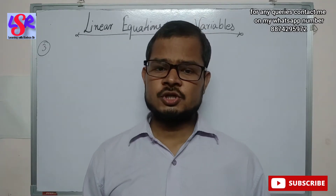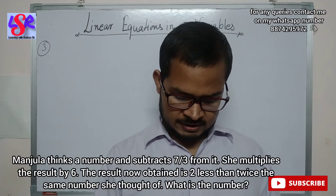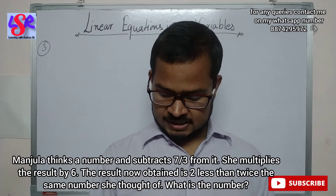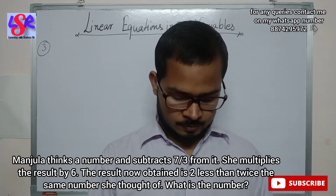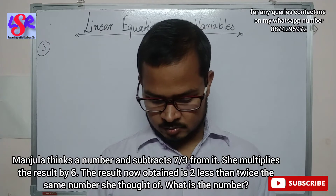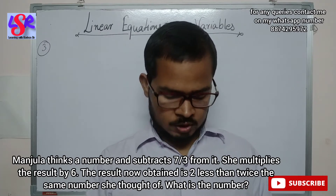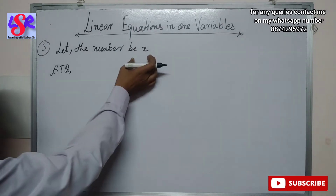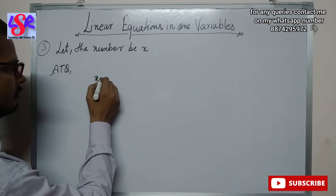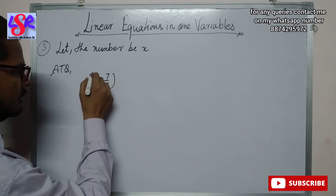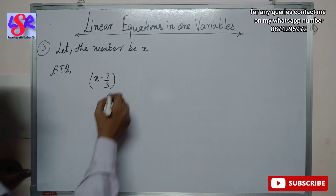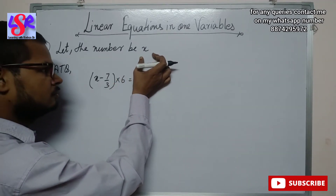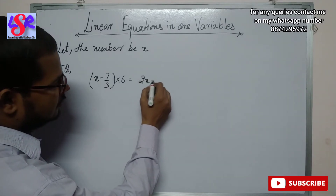Now let's do question number 3. Here, Manjula thinks of a number and subtracts 7 by 3 from it. She multiplies the result by 6, and the result now obtained is 2 less than twice the same number she thought of. What is the number? Now let the number be x. According to the question, 7 by 3 is subtracted from this number, so x minus 7 by 3, and the result is multiplied by 6. This equals to 2 less than twice this number, that is 2x minus 2.